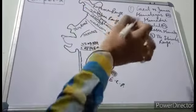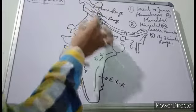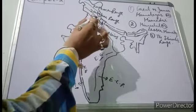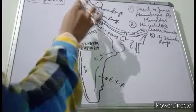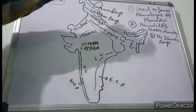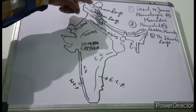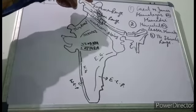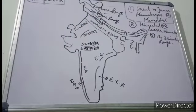India has six types of physical features, and the first is the Himalayas. The Himalayan range spans Jammu & Kashmir, Himachal Pradesh, Uttarakhand, then Nepal, Sikkim, Bhutan, and Arunachal Pradesh. Within the Himalayan range, the first type is the Great Himalayas or Inner Himalayas, which include the Karakoram Range and the Zaskar Range.